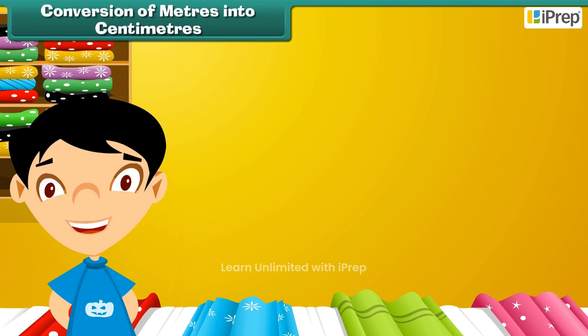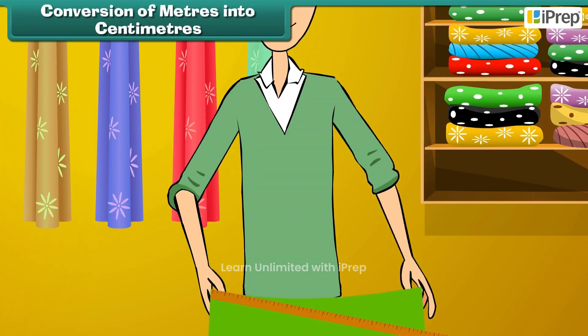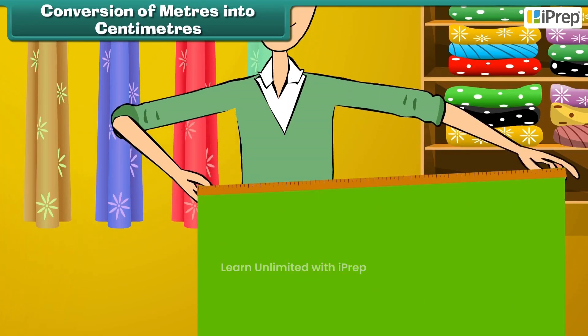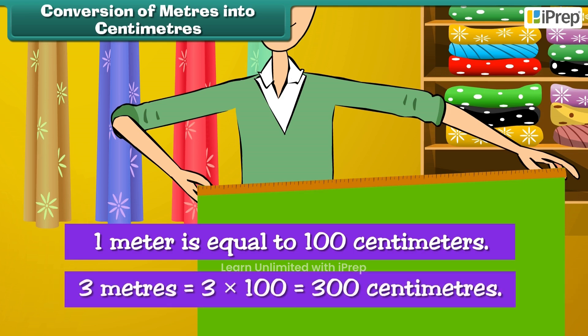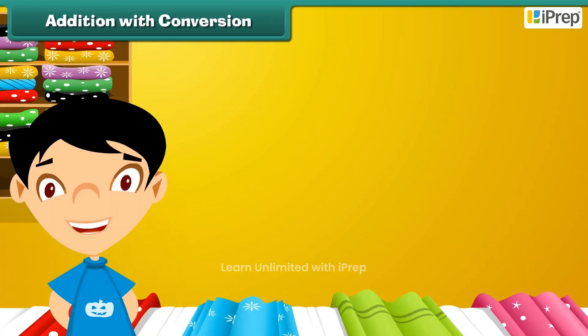It is time to understand the relationship between meters and centimeters. 1 meter is equal to 100 centimeters. Therefore, 3 meters is equal to 3 into 100, which equals 300 centimeters.